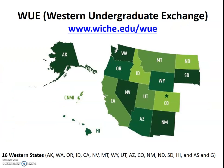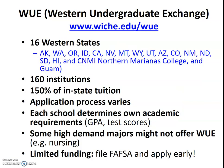WUE — Western Undergraduate Exchange — is a great scholarship program. Students interested in attending over 160 institutions in the listed states can receive resident tuition and a half, essentially getting in-state tuition. The application process varies, so contact the institution to ask whether there's a separate WUE application. There's usually an early deadline in January or February, each school sets its own GPA and test score requirements, and funding is limited, so file your FAFSA and apply early.